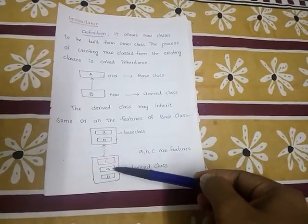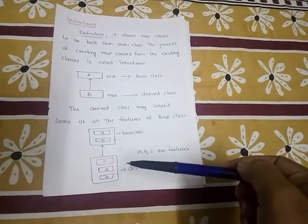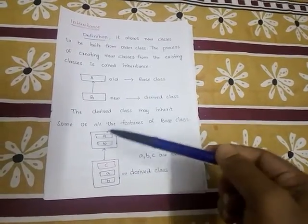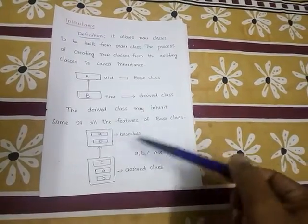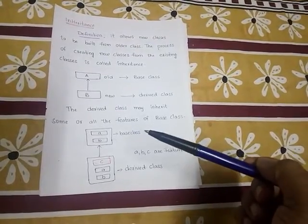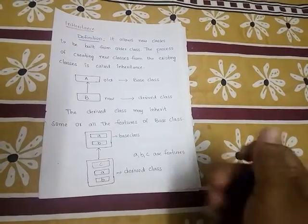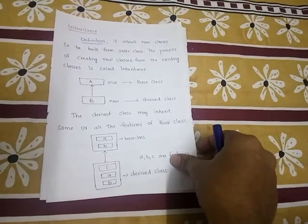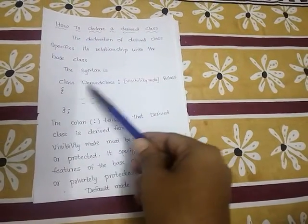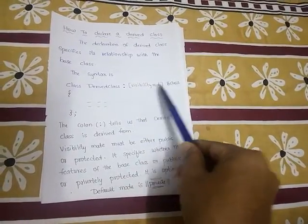When inheriting, you can inherit some or all features of the base class. This depends on how you inherit the base class — either publicly, privately, or protectedly. To declare a derived class, the syntax is: class DerivedClass, colon, visibility mode, BaseClass.